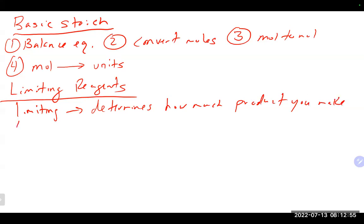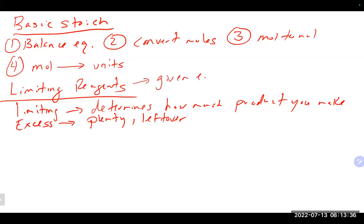Along with the limiting reagent, there's also the excess reagent, of which we have plenty — it'll be left over when the reaction is complete. The limiting reagent is the most important because if you need both reactants to make the product and you run out of one, there's no possible way to make any more product. How you know it's a limiting reagent problem is you're given enough information to calculate the moles of both reactants.